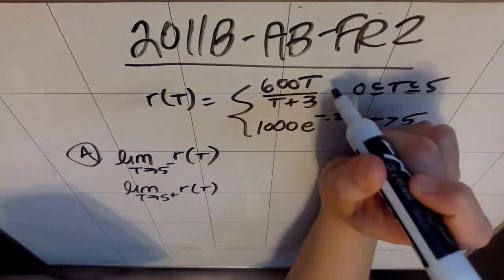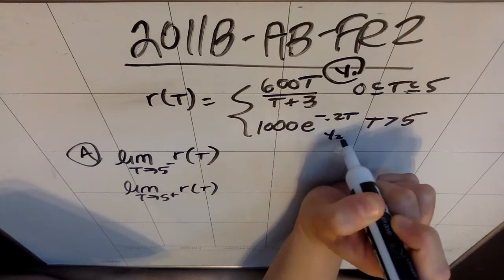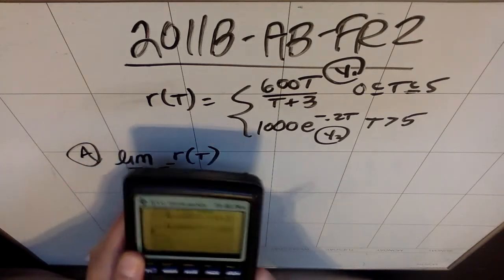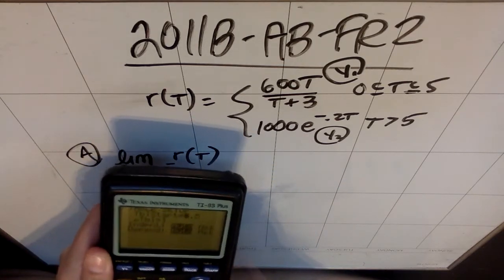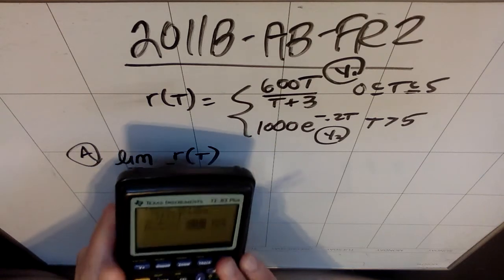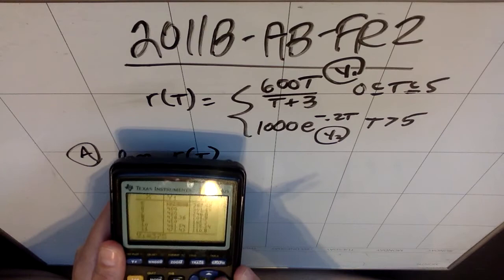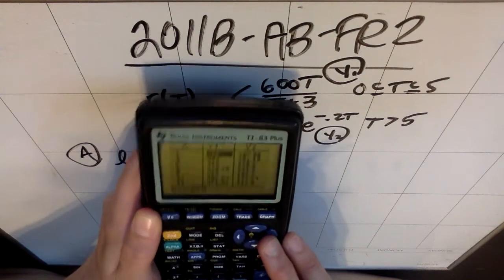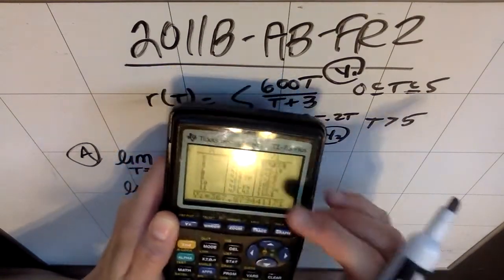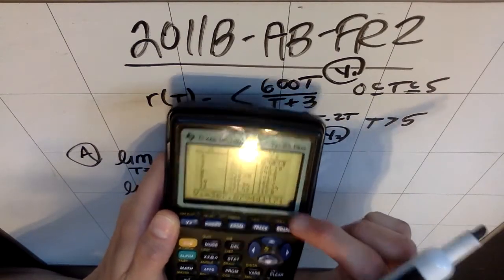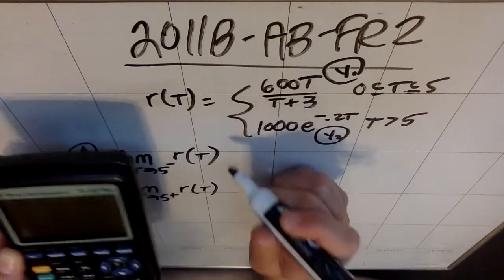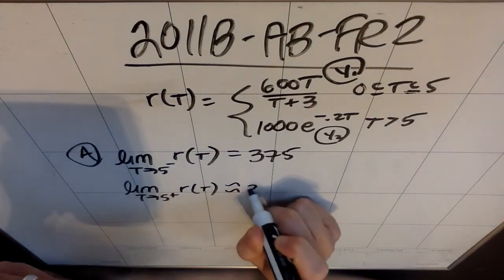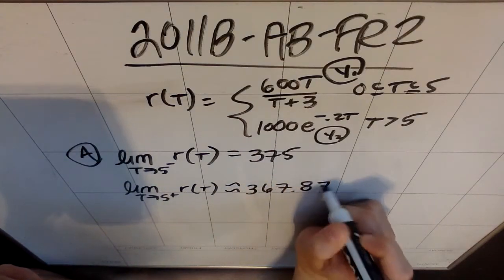I called the first one y1 in my calculator, and I called the second one y2. The easiest way to do this is because I have two functions and I want the y values at the same time, I could go to table set and I could start my table at five. And then if I go to table, it'll give me both y1 and y2. Now, since you want three places, you'll notice that the table doesn't go to three places. So y1 is fine, it's not rounded, but y2 is rounded. But you see how if I go over to that spot, it actually gives me the full value at the bottom. So y1 was the left-sided limit, and it was 375. And y2 was my right-sided limit, and it was approximately 367.879.